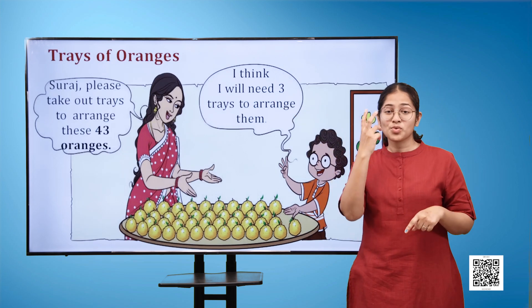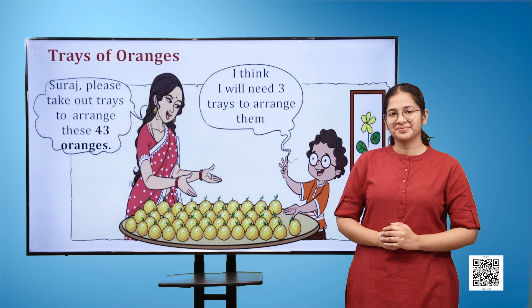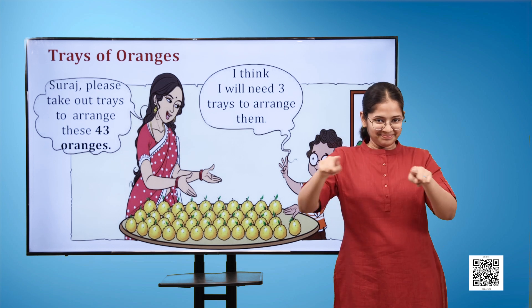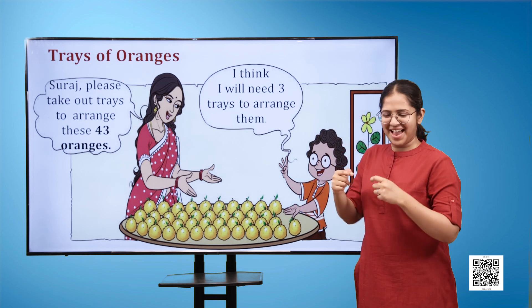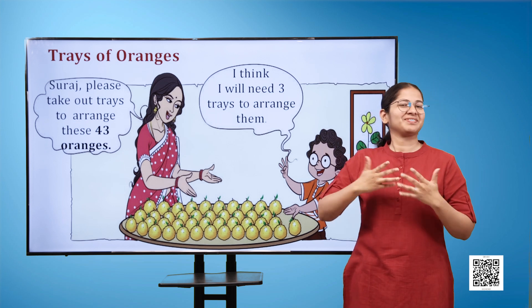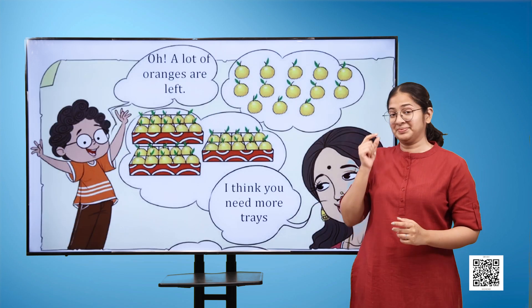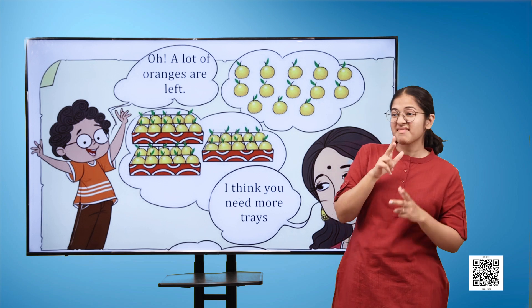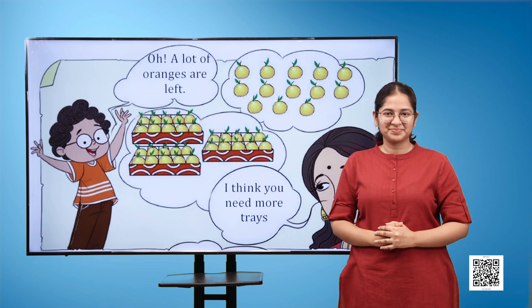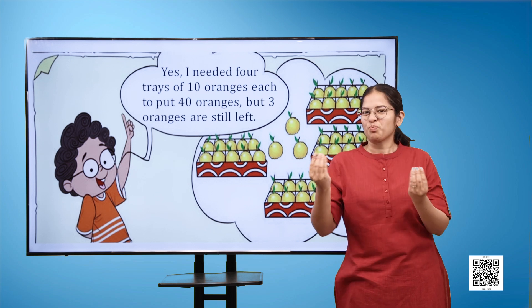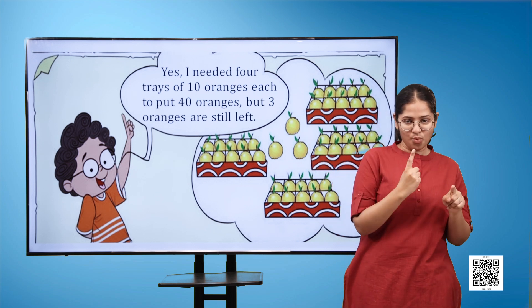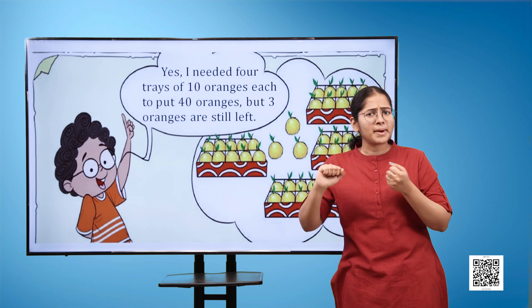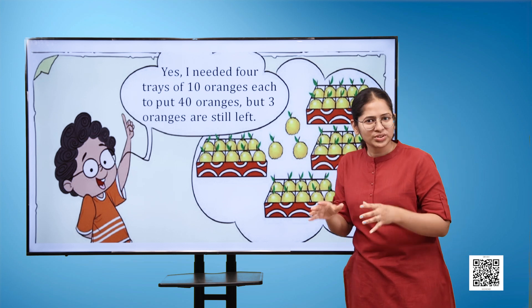Trays of oranges. Here is an image of a lady and a boy. They both are standing in front of a table that has oranges placed on it. The lady says Sooraj, please take out trays to arrange these 43 oranges. Now on page 10 we have three images. The boy has arranged oranges in three trays. Each tray contains 10 oranges. Yes, I needed four trays of 10 oranges each to put 40 oranges, but three oranges are still left. We can see in the image that there are four trays containing 10 oranges each and three oranges are left.